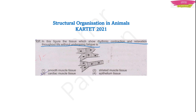In simple language, the question is asking about a tissue in our body that shows regular rhythmic contraction and relaxation throughout life without getting tired. There is some muscle which doesn't get tired and works continuously. The options are: smooth muscle tissue, striated muscle tissues, cardiac muscle tissues, and epithelium tissues. Since the question mentions contraction and relaxation, the fourth option — epithelium — is immediately wrong, as it is not a muscle.